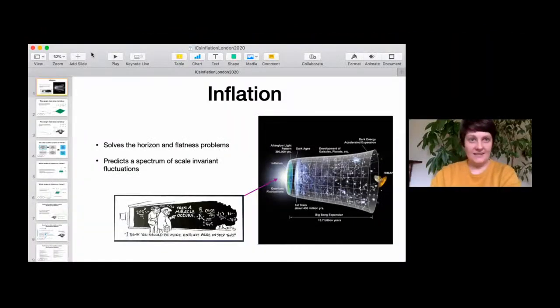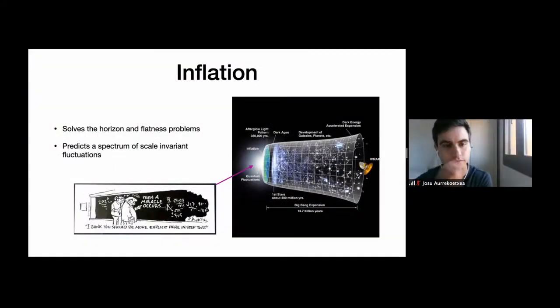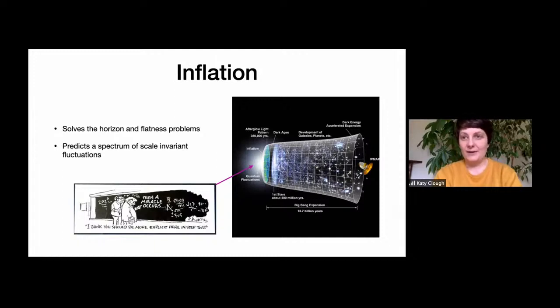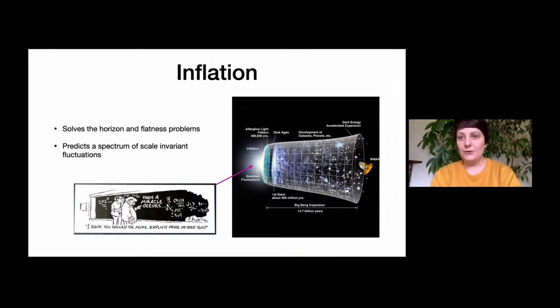Katie takes over to explain why a general initial condition solver is needed. While many problems don't require such generality, for the specific problem of how inflation actually got started — which is really interested in — we want the most general possible solution. We know that inflation solves the horizon and flatness problems and gives the right spectrum of fluctuations observed in the CMB, making it very successful.